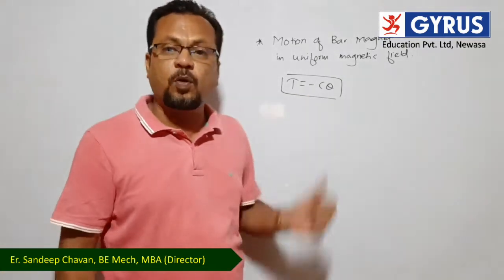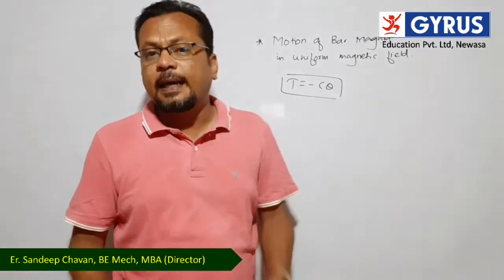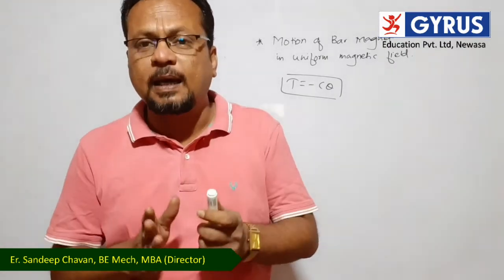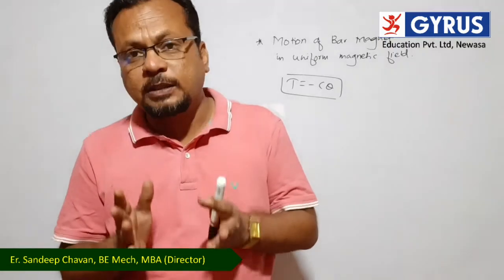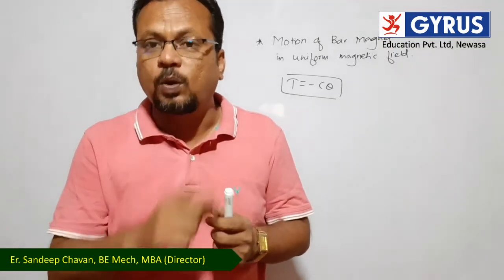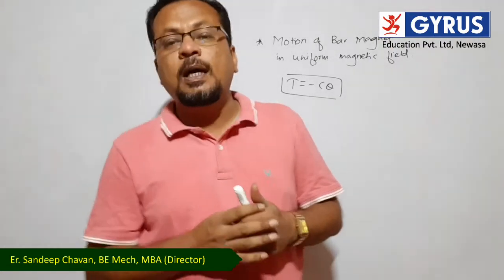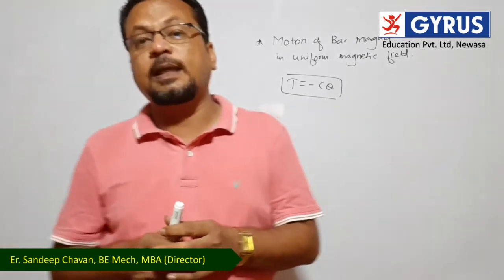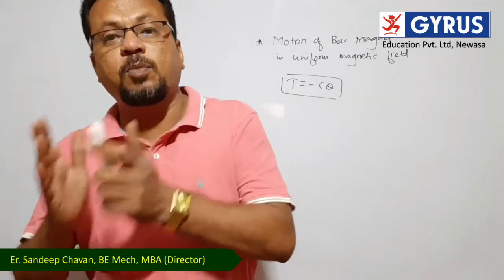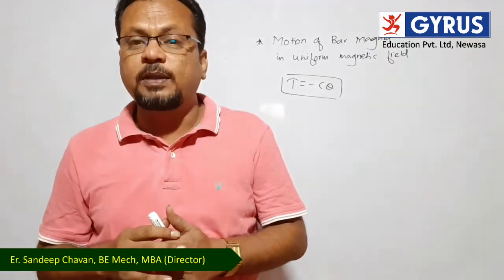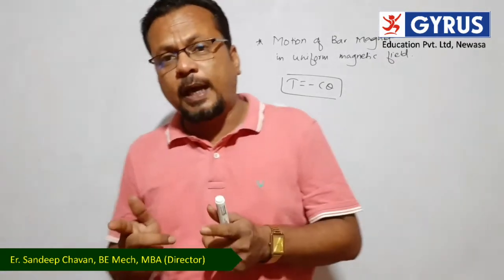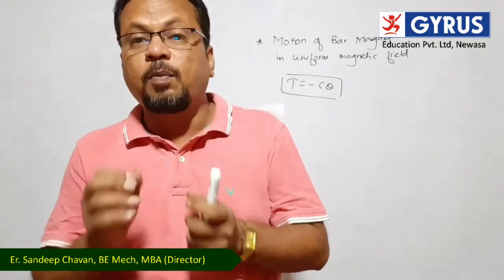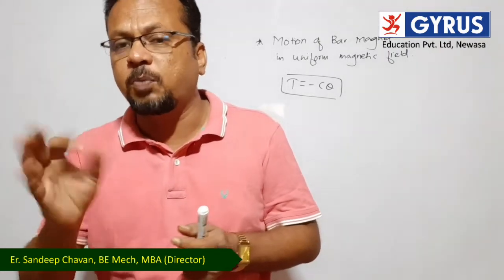We will discuss angular simple harmonic motion further. If we place a bar magnet in a uniform magnetic field, it will oscillate and follow angular simple harmonic motion. To prove this, we will show that a bar magnet placed in a uniform magnetic field performs angular simple harmonic motion.